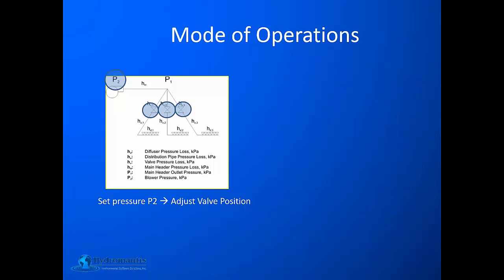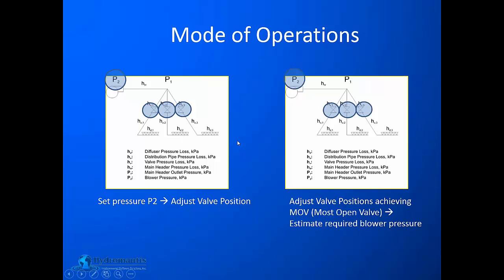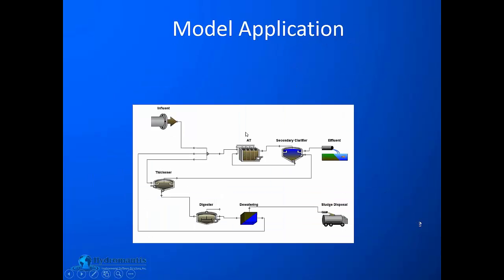There are two modes of operation. In the first, the user sets a blower pressure and the model adjusts valve positions to estimate the required valve positions for given air flow rates into the aeration tanks. In the second mode, the model adjusts valve positions such that at least one valve is at the most-open position, and then estimates the required pressure at the blower side.